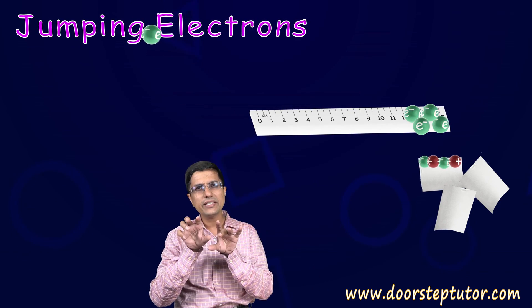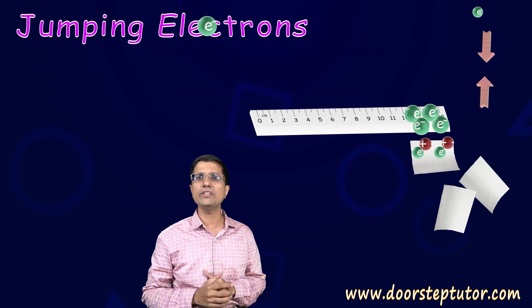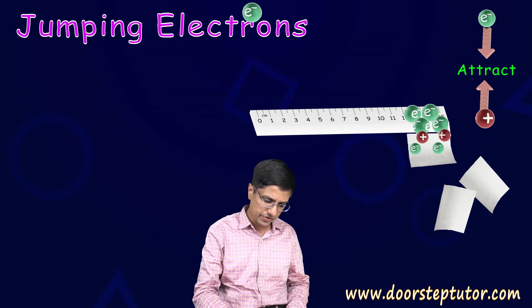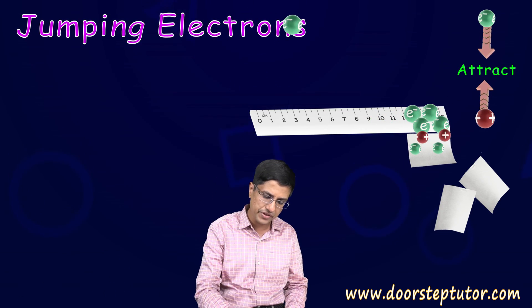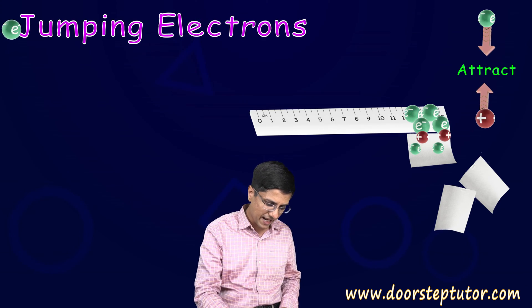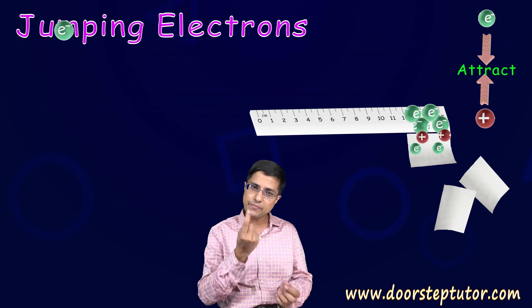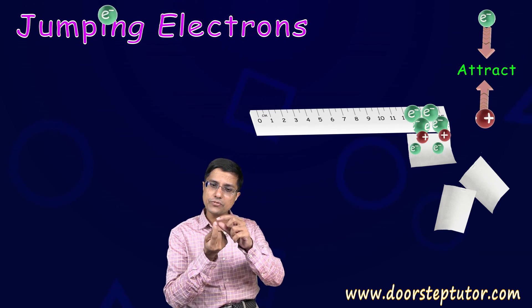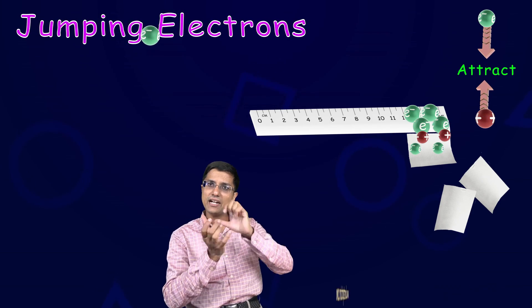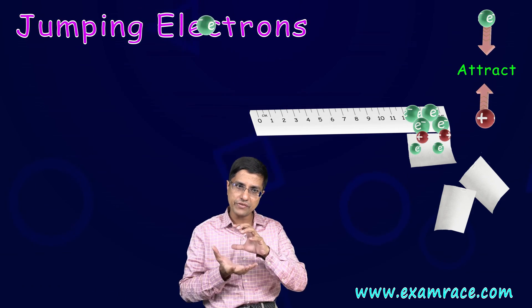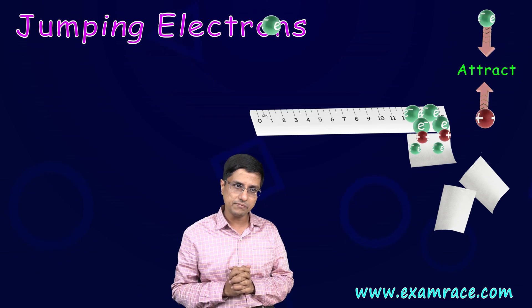Now this negatively charged scale can attract those bits of paper which are lying down. How the attraction works, we'll see it in a little bit. In the next slide we'll see it. But just see that there is an attraction between this negatively charged scale and the tips, very tips of this paper, which become sort of positively charged, and then they're attracted together. Negative and positive, they attract. And this is the basic principle.